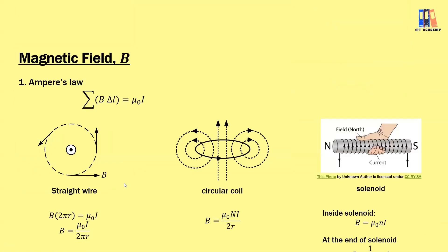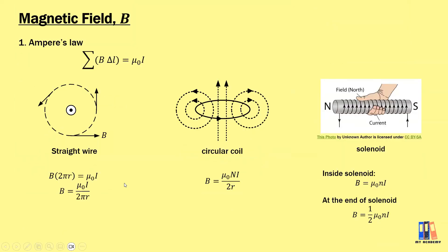Moving on to the next topic: the magnetic field. We learn about Ampere's law, which is used to derive the magnetic field around a straight wire: B equals mu-naught I over 2 pi R. For a circular coil, B equals mu-naught NI over 2R, where N is the number of turns and R is the radius. For a solenoid, B equals mu-naught NI, where N is the number of turns per unit length. At the end of the solenoid, the field is only half.